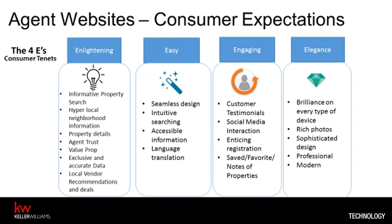Number three — Engaging. They want to see customer testimonials — we'll talk later about ratings and reviews, but on your site they want to know other people have said you're great and why they enjoyed working with you. They want to be able to engage with you on social media directly from the website. And they want enticing, easy registration — the ability to save their favorites and make notes on properties. This is one of the most critical things, since they're looking at a lot of properties and want to remember what they liked, what they didn't like, and why they favored it.